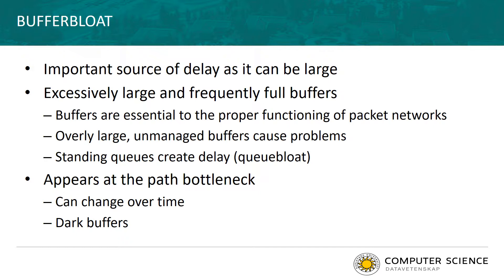This, in combination with the senders on the internet that actually try to fill buffers, may create large delays and standing queues at the bottlenecks in the network. Buffer bloat appears at the path bottleneck, and this means the bottleneck and where buffer bloat occurs can change over time. This makes it difficult to identify buffer bloat, because you may have a lot of large buffers lurking in your network that are not visible until the bottleneck ends up there. These are sometimes referred to as dark buffers — they are not visible until they suddenly pop up and cause delays and hamper application performance.